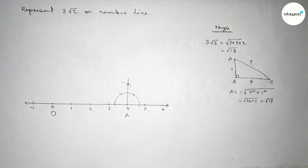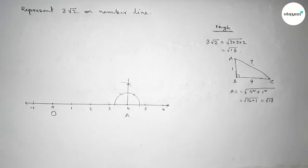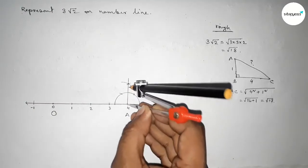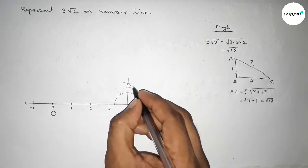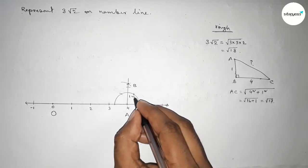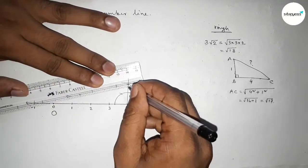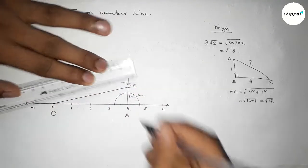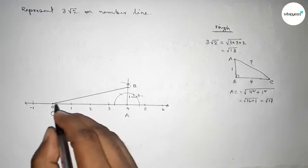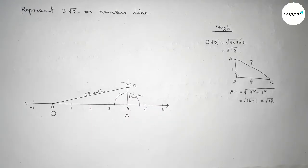Taking one unit length between 0 and 1, putting the compass and cutting to mark point B — this is one unit length. Now joining O and B. From right angle triangle OAB, this hypotenuse OB is obviously √17 units.